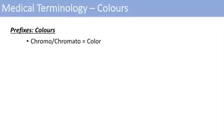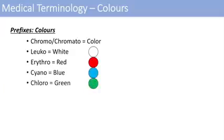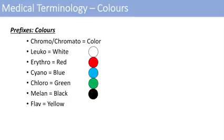The next group of prefixes is colors. The prefix for color itself is chromo or chromato. Leuco means white — think of leukocyte. Erythro means red — think of erythrocytes, red blood cells. Cyano is blue — think of cyanosis when you become hypoxic and turn blue. Chloro is green — like chlorophyll in plants. Melan or melano is black — think of melanoma. And flav, which you very rarely hear, means yellow.